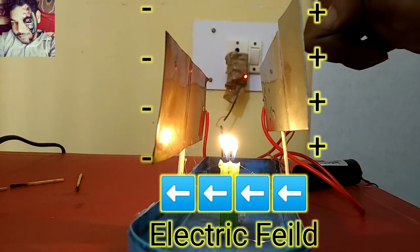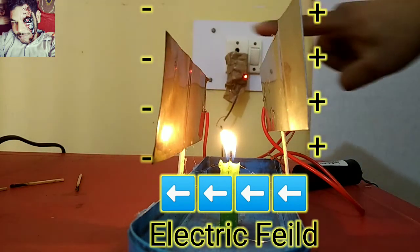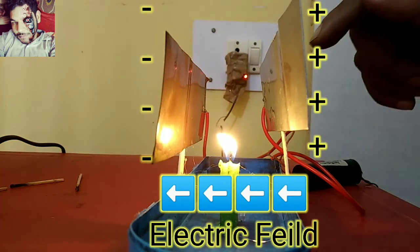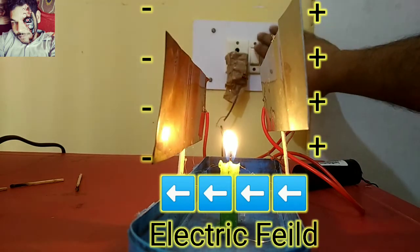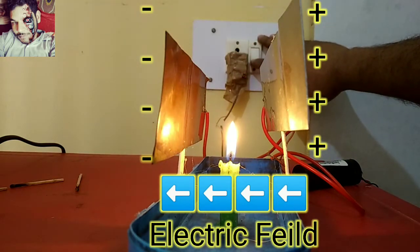The flame is bending towards this side, which means the electric field is from this side to that side. This is called electric wind.